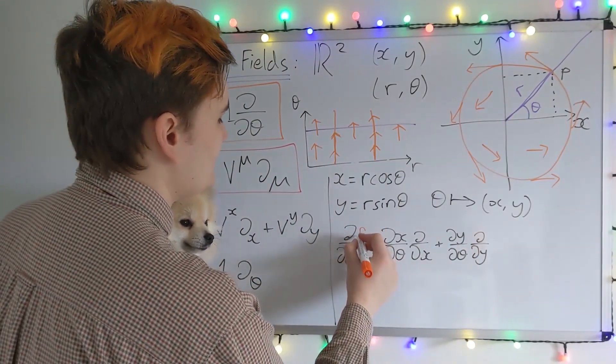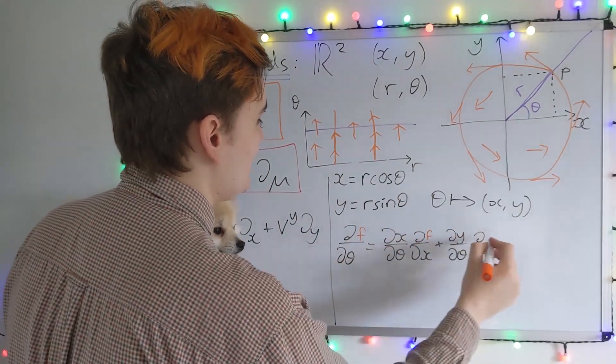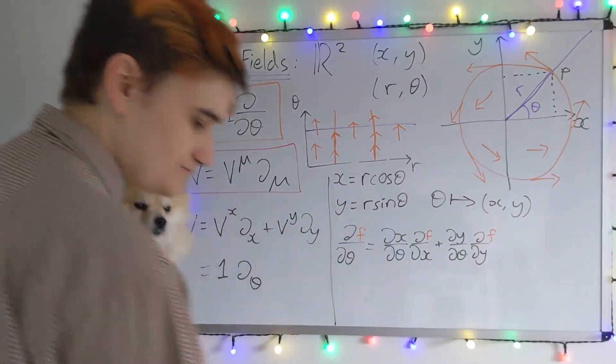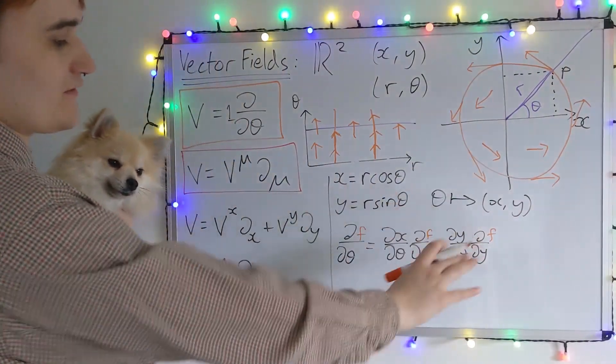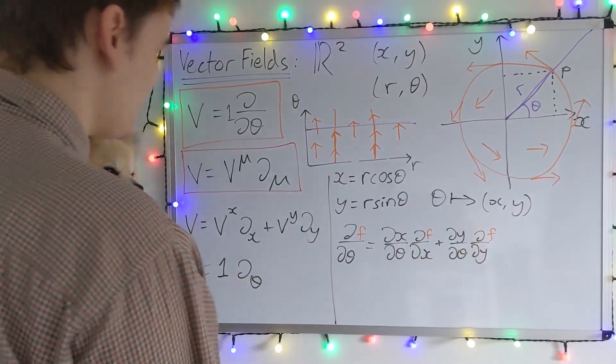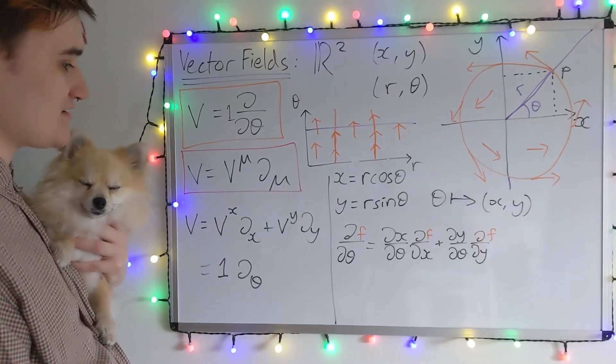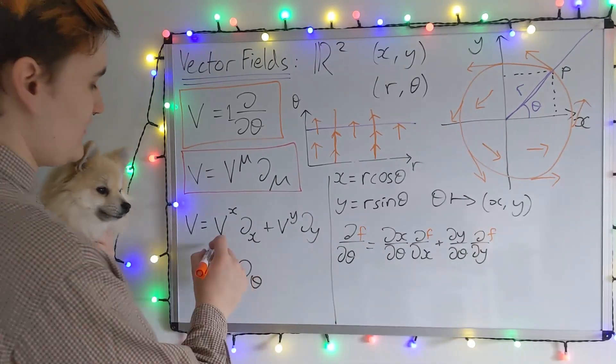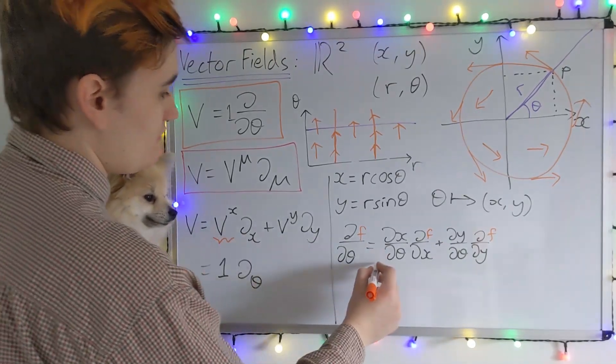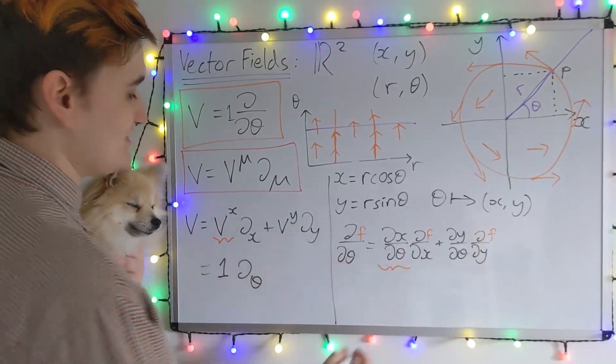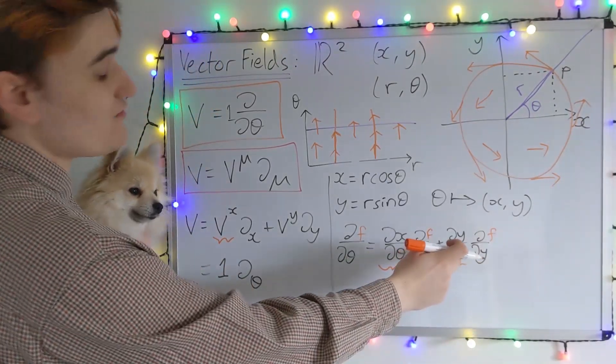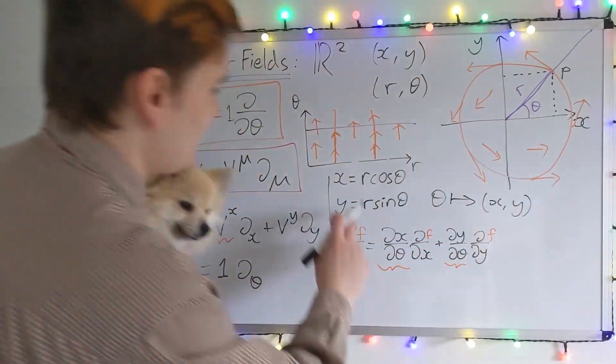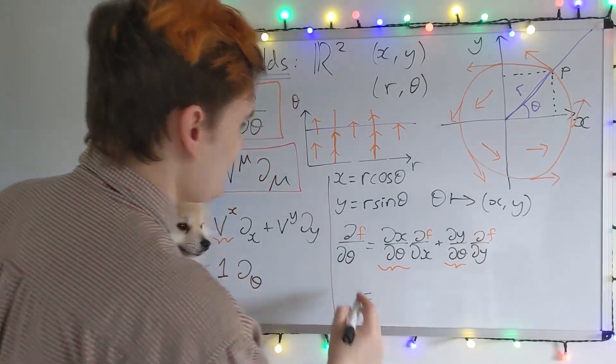If it helps you to visualize, you could write in the arbitrary function here. Remember, this is the arbitrary function that the vector is eventually going to act on. So now that we've used the chain rule, that's all the work done. We just need to make a few identifications. So this D by DX is our basis vector here and similarly for Y. So we can identify the component VX is DX by Dθ, and similarly, VY is DY by Dθ. And now I simply just need to take the derivative of these two expressions and I'll find...